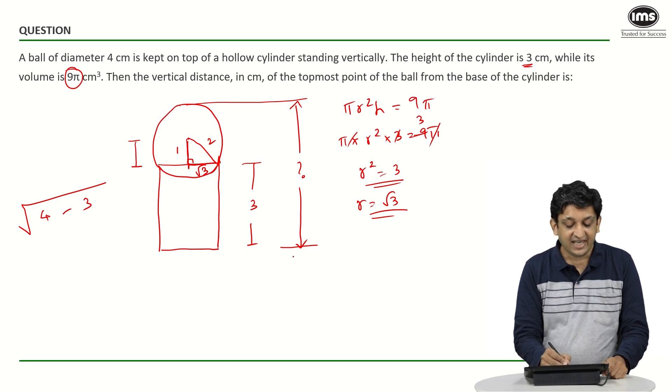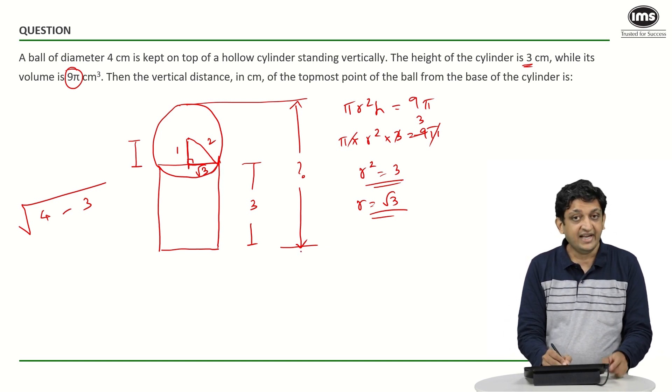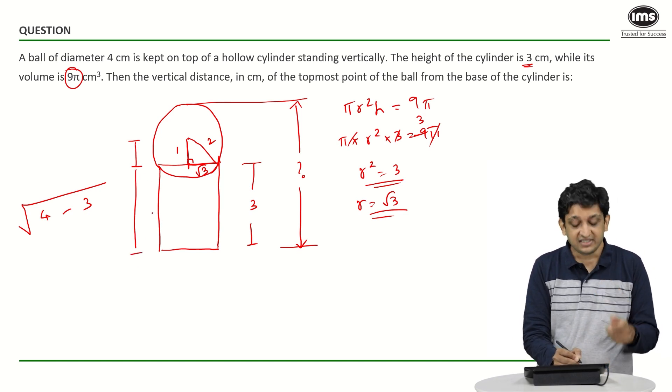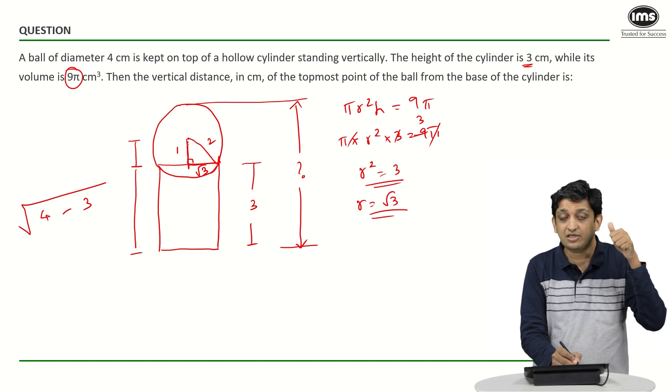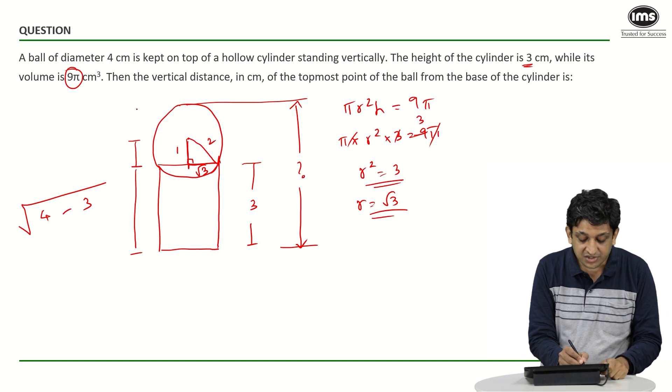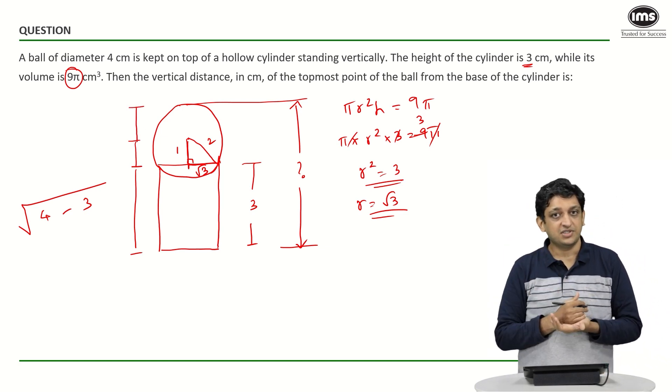We have to find this entire height. Now this entire height consists of 3 things. One thing is the height of the cylinder itself. The other thing is the distance between the centre of the sphere to the top surface of the cylinder. And the third thing is of course, from the topmost point till the centre of the sphere.